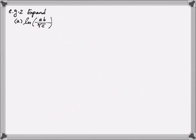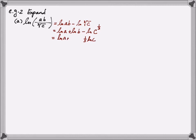The next type of question involves expanding: starting from a single expression in the log, rewrite it using the rules into multiple terms. For example, the natural log of the quantity a times b divided by the cube root of c. Using the second rule, write this as a difference: natural log of ab minus natural log of cube root of c. Then use the first rule to expand the product into a sum: natural log of a plus natural log of b. Finally, use the third rule, noting cube root of c is c raised to the one-third power, giving one-third natural log of c.